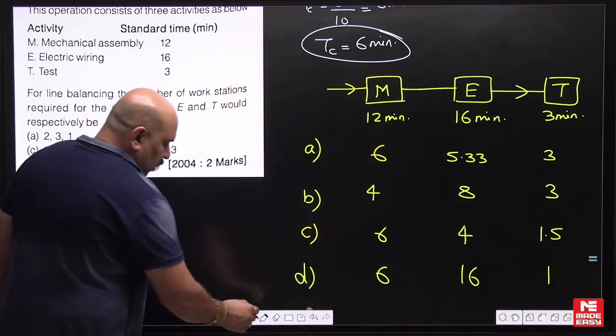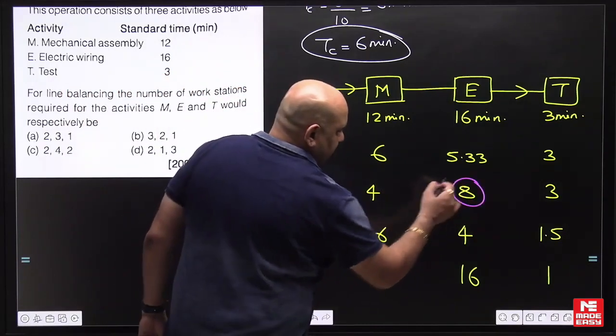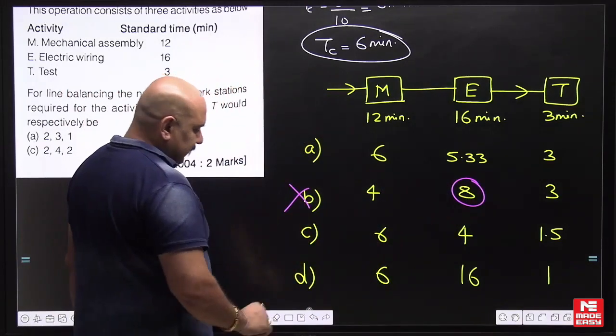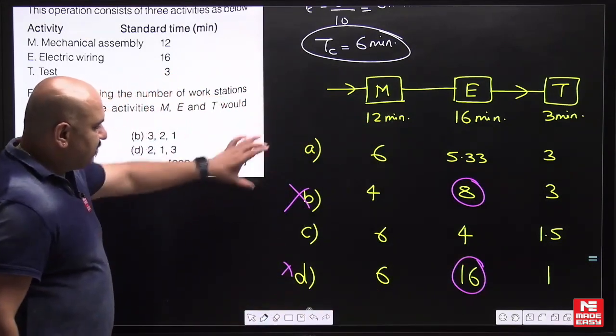Now cycle time should not exceed 6 minutes. If we talk about option B, the cycle time will be 8, so this option is already out. Here also the cycle time will become 16, this option is already out. In options A and C both, maximum time is 6 minutes, means cycle time condition is met in both.